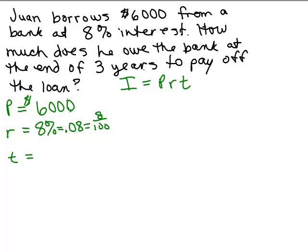So if it said three months, that would mean something very different. In fact, we'll do that next. So we've got three for three years and we're not asked for the amount of interest. We're asked how much does he owe the bank at the end of three years. But we need to figure out the interest first so that we could add that to the $6,000.